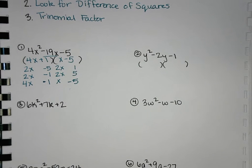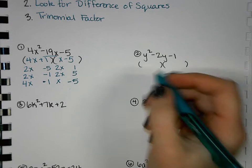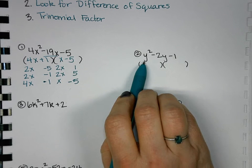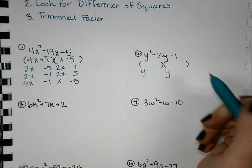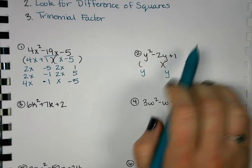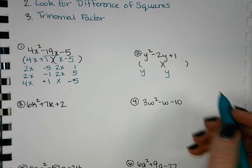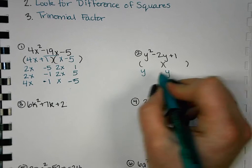So on number 2, do we have a GCF? Anything in common between those terms? No. Is it difference of squares? No, it's a trinomial. So then we can go ahead and start our factoring. So two things that multiply to y². y and y. Two things... that should be a plus. Two things that multiply to 1. Negative 1 and negative 1.